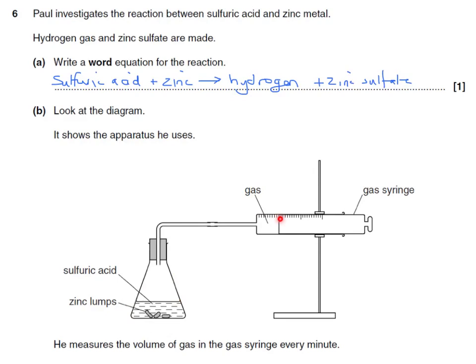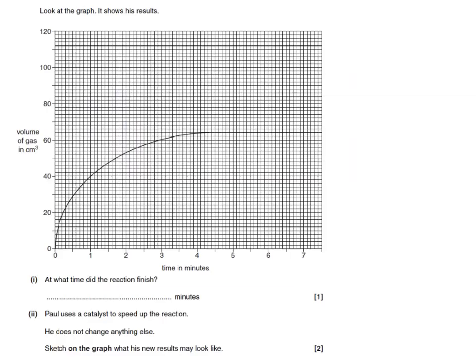He measures the volume of gas in the gas syringe every minute. Looking at the graph showing his results — at what time did the reaction finish? That would be the point at which the line becomes horizontal.